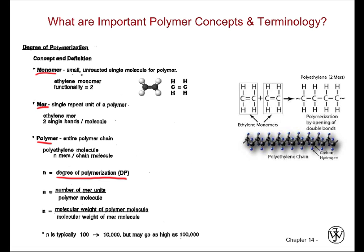The monomer is the small, unreacted single molecule for the polymer. As an example, we have ethylene here. Ethylene is shown in the ball-and-stick model and the Lewis structure. It is shown here as a monomer, in monomer form here and here, right about to be reacted.